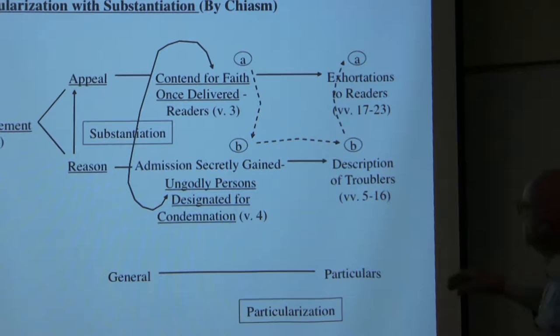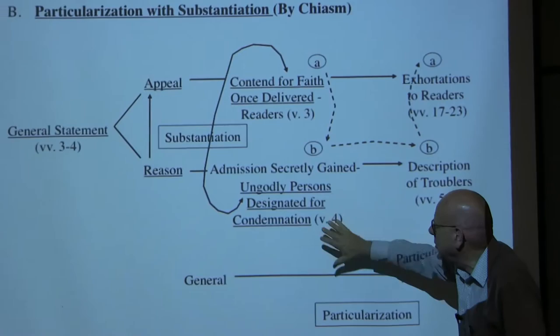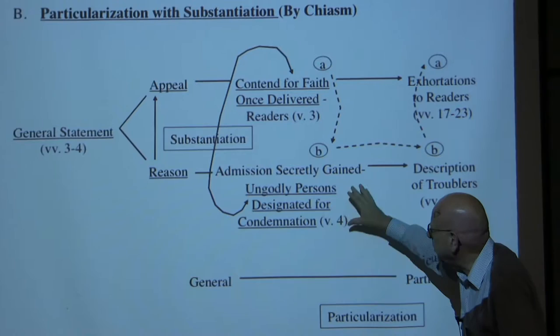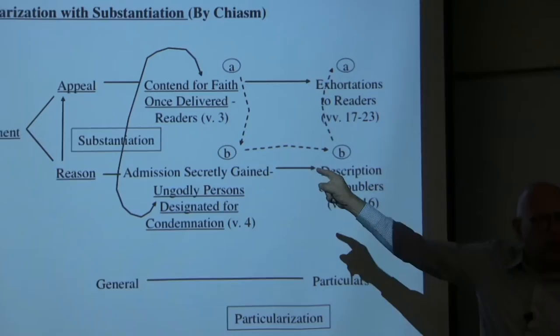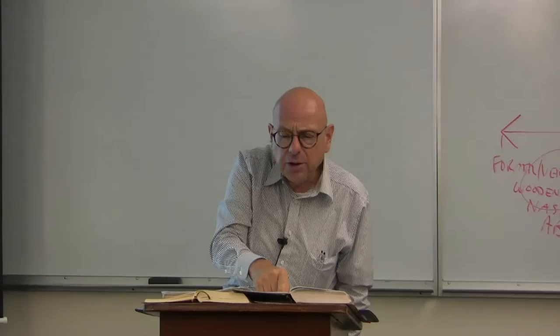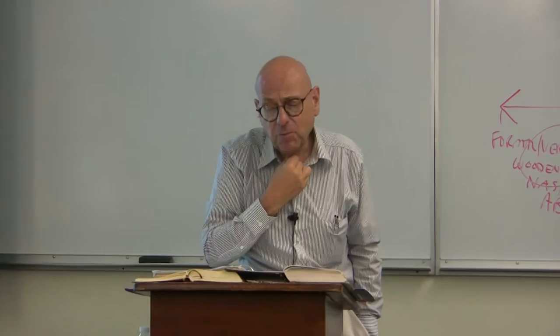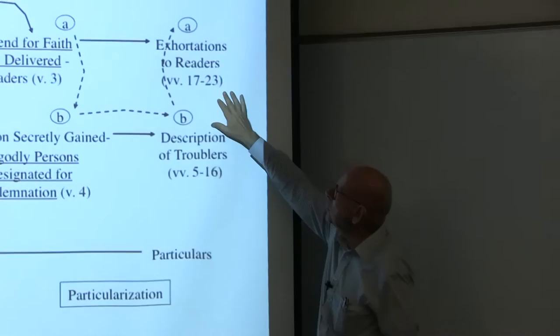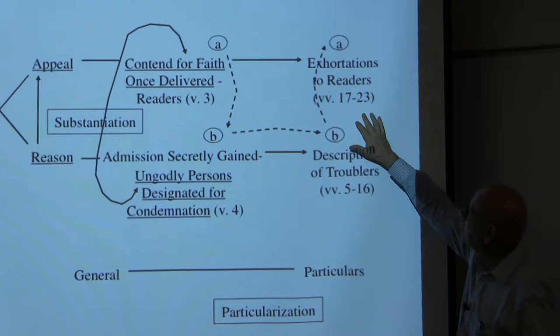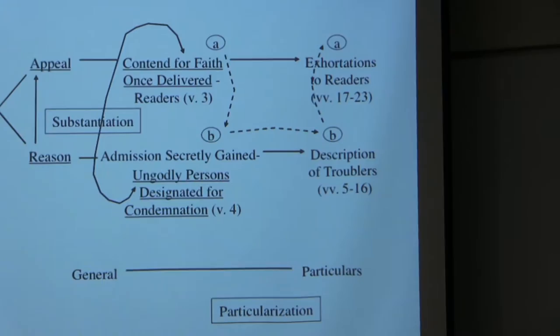So it's quite clear that he particularizes and specifies this general description of the ungodly persons and their condemnation designated long ago in verses 5 through 16, and then in verses 17 through 21 he particularizes specifically what he means by contending for the faith once for all delivered to the saints. If you're going to preach or teach on this passage — one of the most familiar verses in Jude — it would be very important to interpret it in light of the particularization in verses 17 through 21.